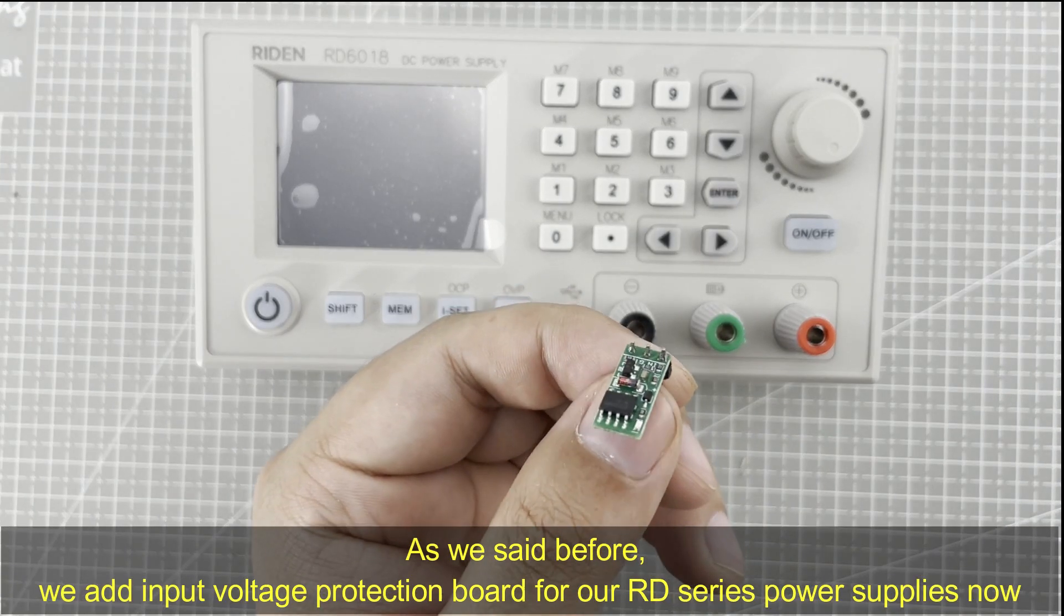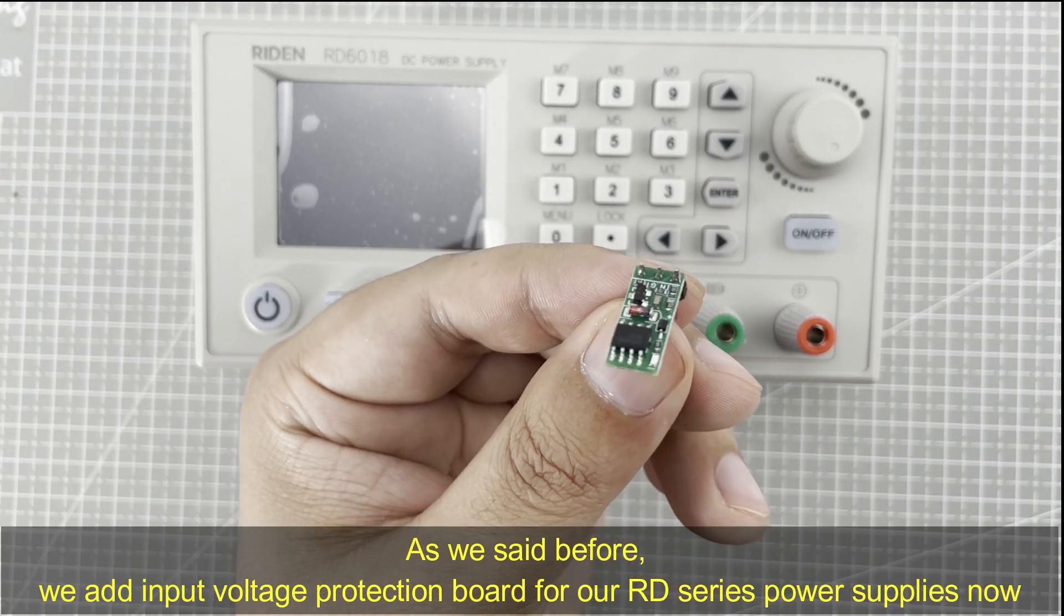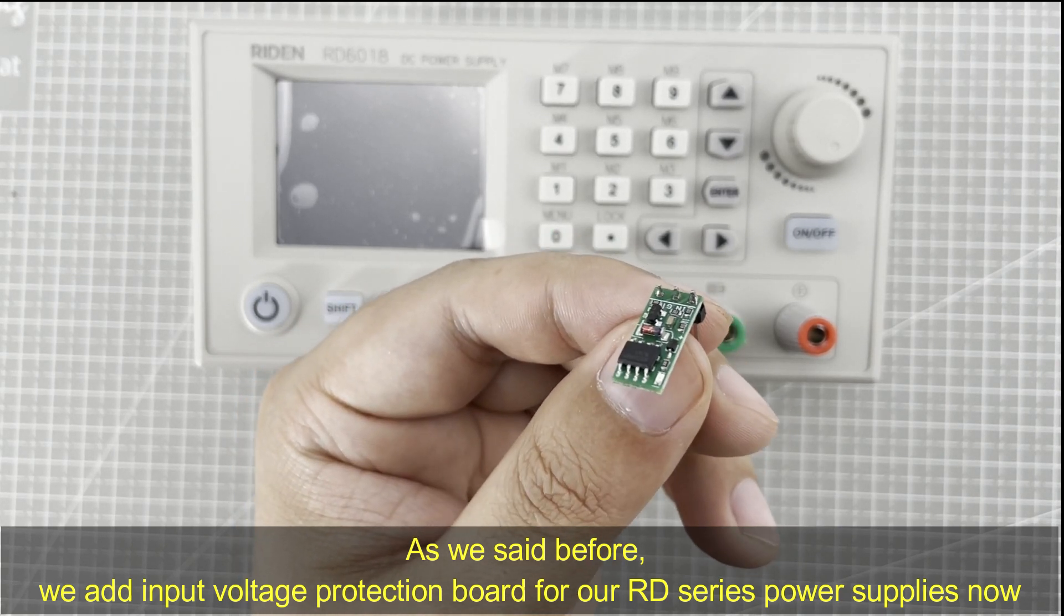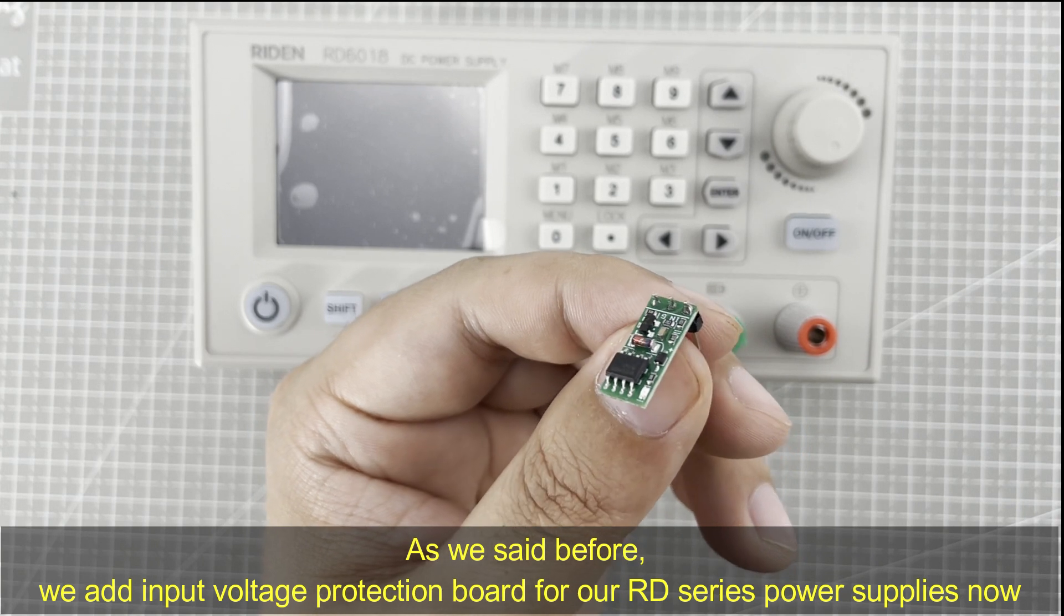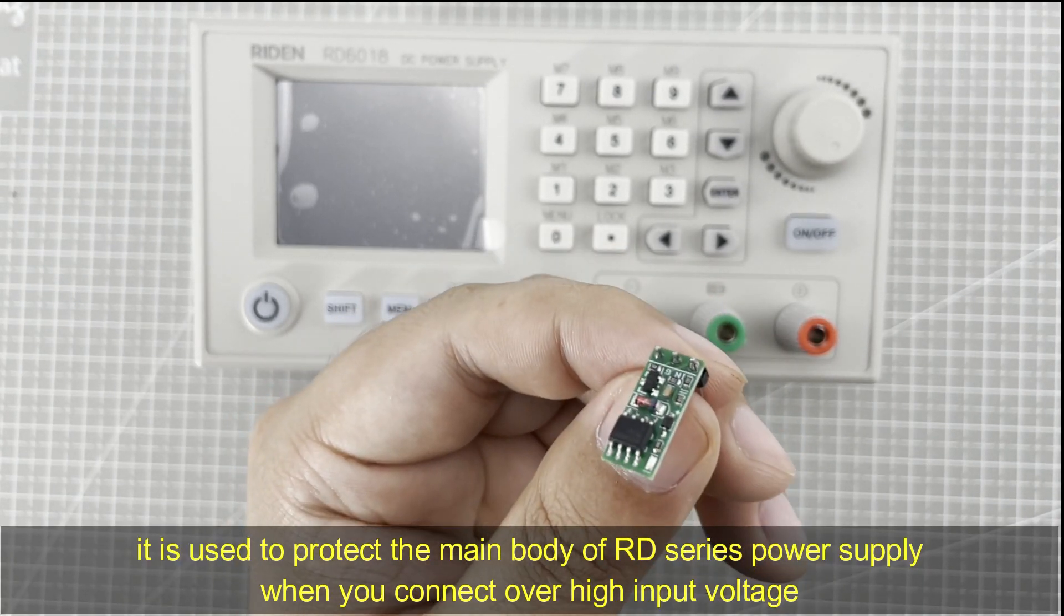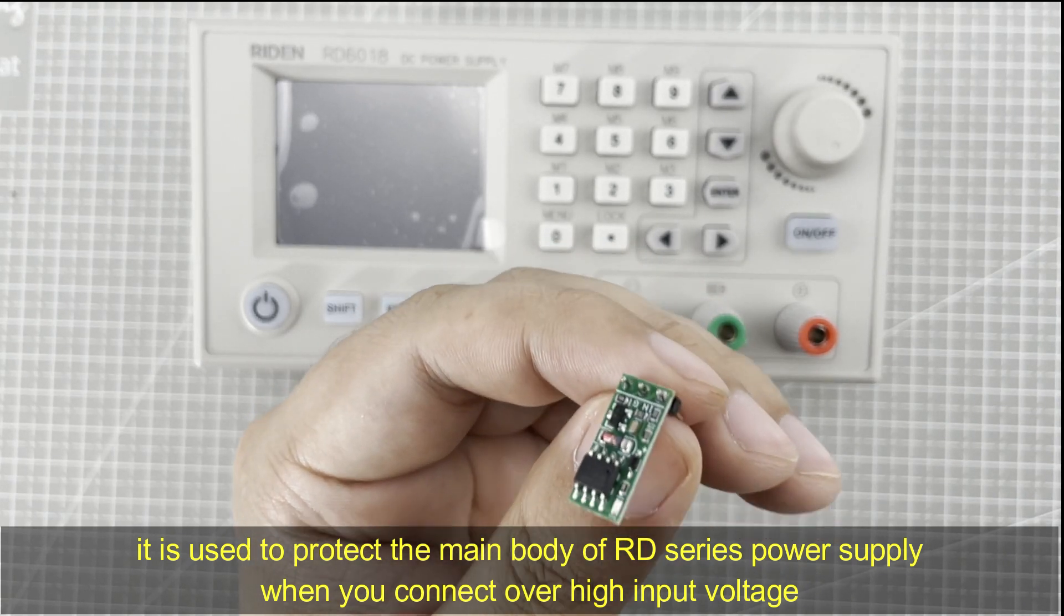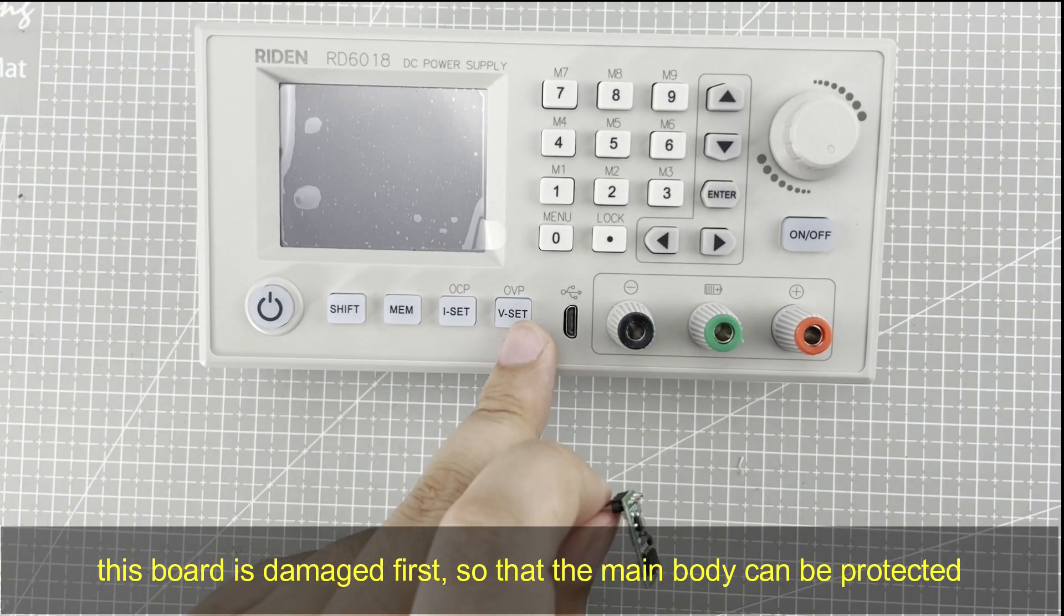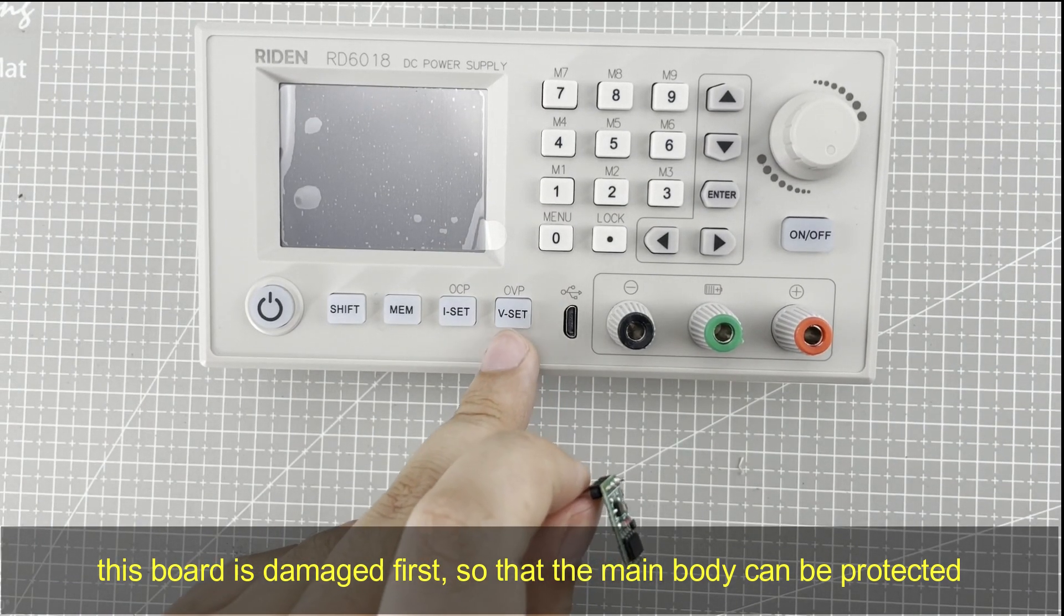As I said before, we now add an input voltage protection board for our RD series power supply. It is used to protect the main body of the RD series power supply when you connect over high input voltage. This board gets damaged so that the main body will not be damaged.